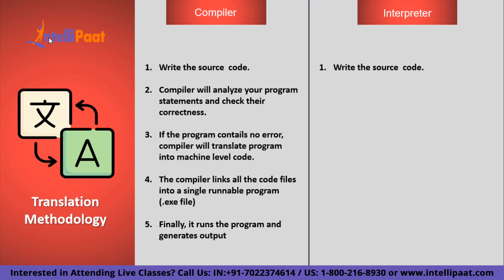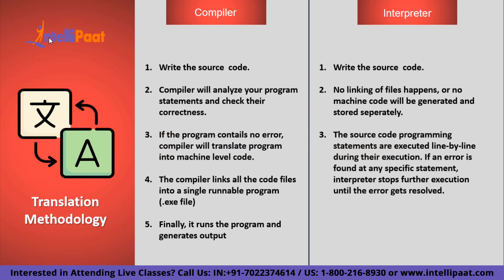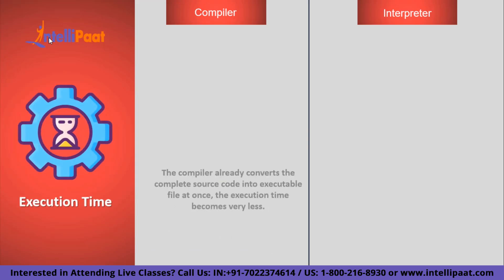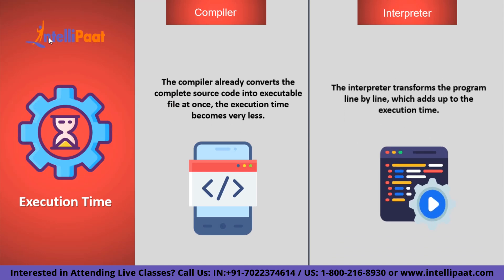Interpretation differs a lot from this process. It begins with you writing the source code, but no linking of files happens and no machine code is generated separately. The source code statements are executed line by line during execution. If an error is found at any specific statement, the interpreter stops further execution until the error gets resolved. The second differentiating factor is the way translation happens: the compiler translates the whole code at once, whereas the interpreter follows a line-by-line translation approach. Regarding execution time, since the compiler converts the complete source code into an executable file at once, execution time is very less, whereas the interpreter's line-by-line approach adds to execution time.